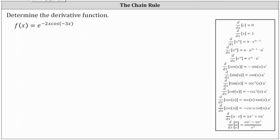We're asked to determine the derivative function given f of x equals e raised to the power of negative 2x times cosine of negative 3x. Because f of x is a composite function, we will have to apply the chain rule.